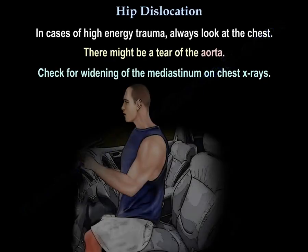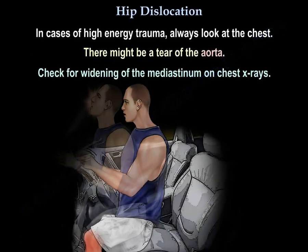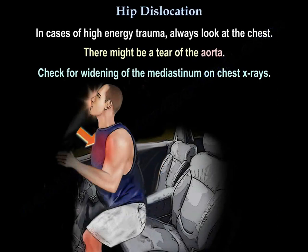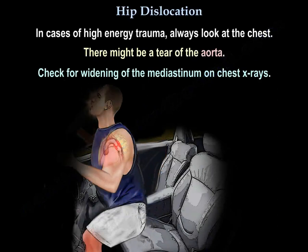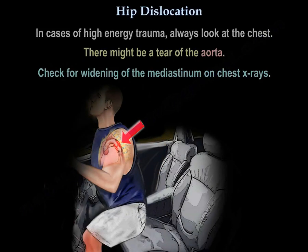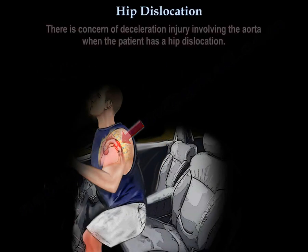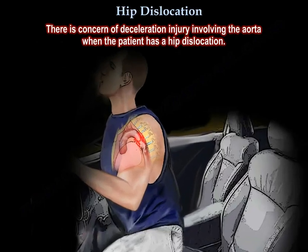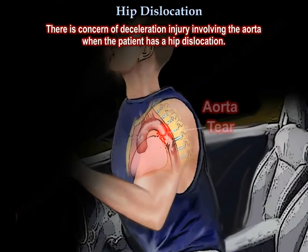In cases of high-energy trauma, always look at the chest — there might be a tear of the aorta. Look for widening of the mediastinum on chest x-ray. There is a concern for deceleration injury involving the aorta when the patient has hip dislocation.